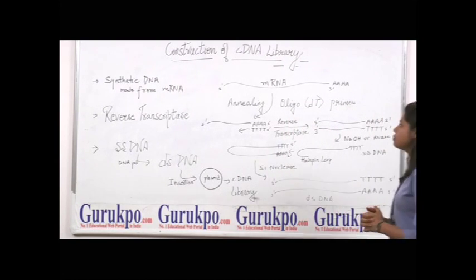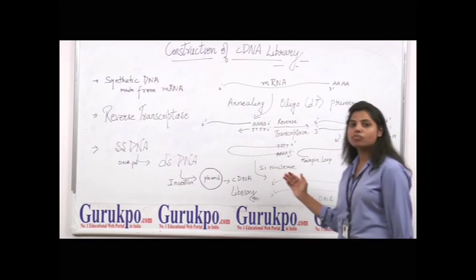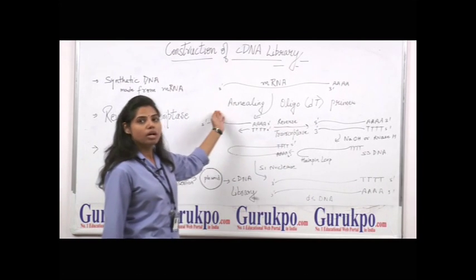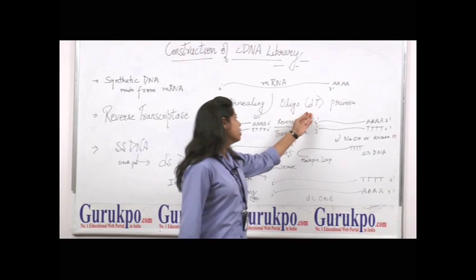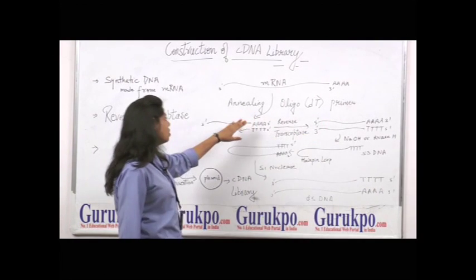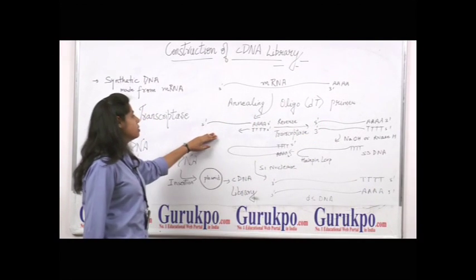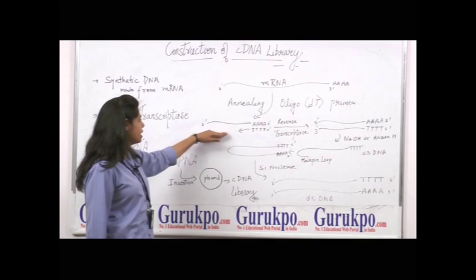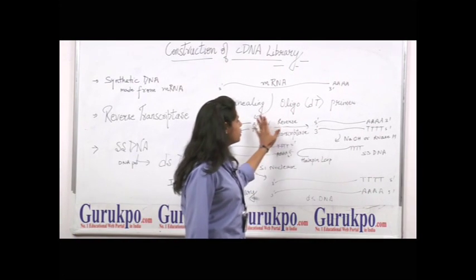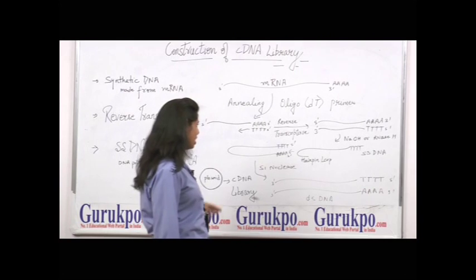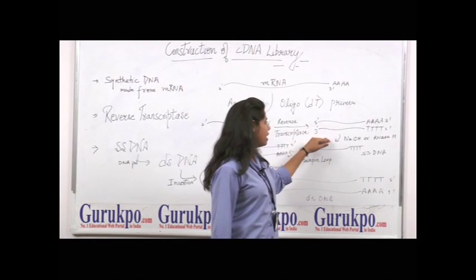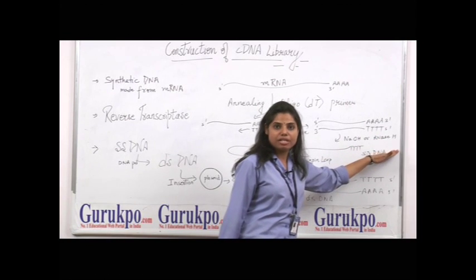The steps are like that. First of all, the mRNA we have to anneal is through a primer. The primer is an oligonucleotide primer. From this primer, the synthesis of cDNA takes place. Now, this synthesis is going to be cut by NaOH or RNase H.